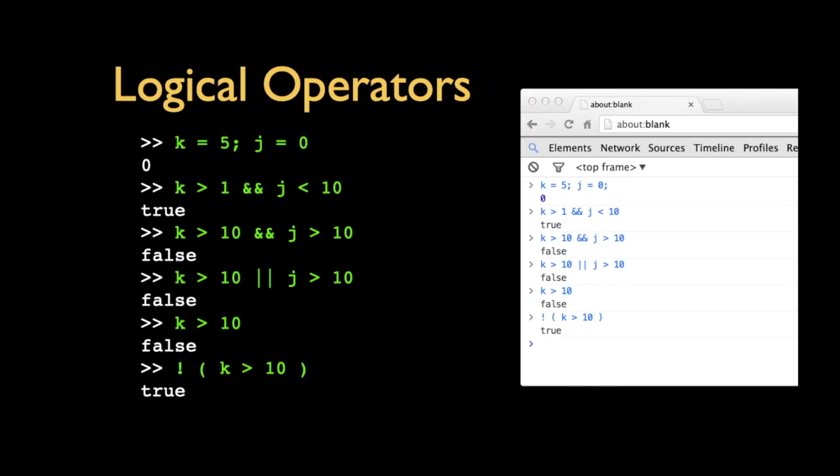So, there's a whole series of logical operators much like that, that return for you true and falses. We've got double ampersand, which is and. So, for the whole operation, for the whole expression to be true, both sides have to be true. So, it's K greater than 1 and J less than 10. And in this case, the answer is yes. Is K greater than 10? No. And is J greater than 10? That's true, but this one's false. False and true become false.